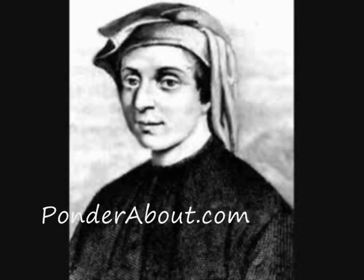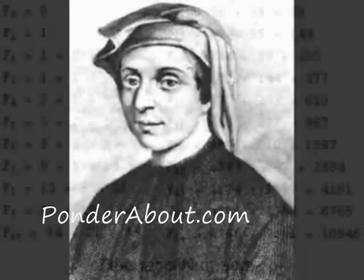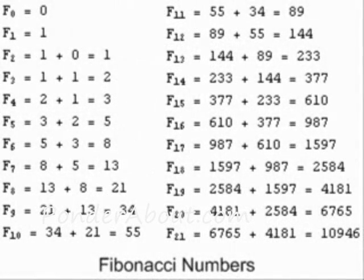He took the numbers 0 and 1, added them together to get 1. He took the last two numbers of that list, 1 and 1, added them to get 2. And he kept adding the last two numbers of the list to generate the next numbers.